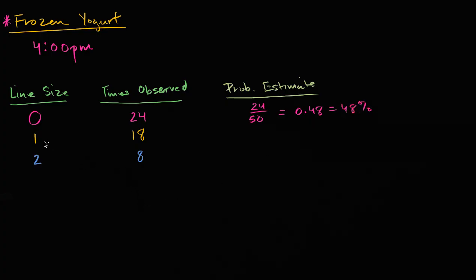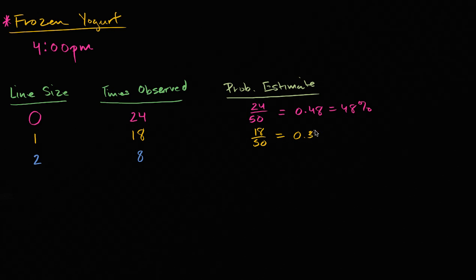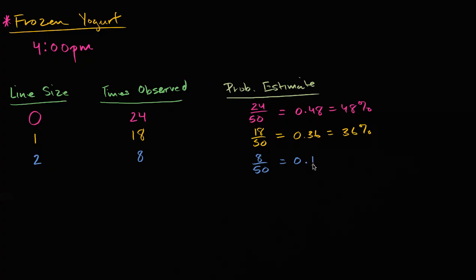Now, what's the relative frequency of seeing one person in line? Well, you observe that 18 out of the 50 visits. That would be a relative frequency. 18 divided by 50 is 0.36, which is 36% of your visits. And then finally, the relative frequency of seeing a two person line, that was eight out of the 50 visits. And so that is 0.16. And that is equal to 16% of the visits.